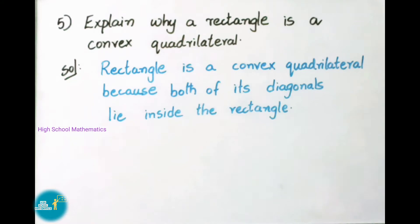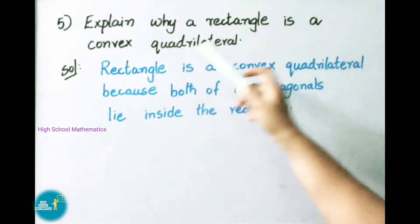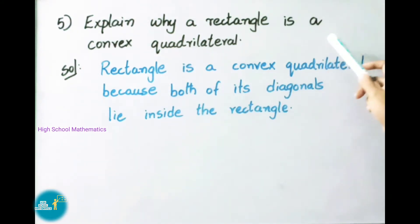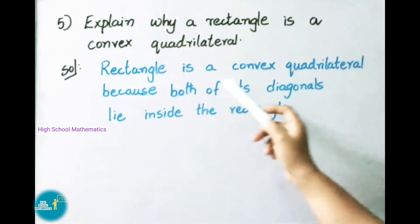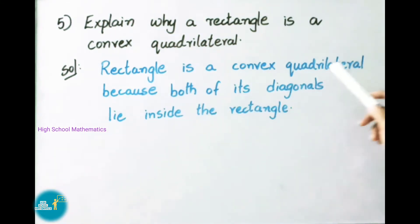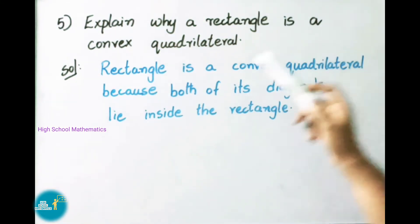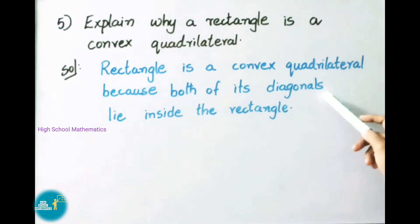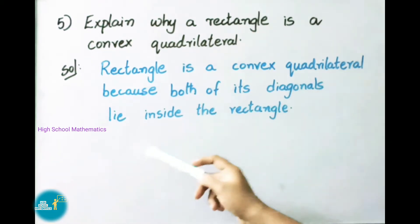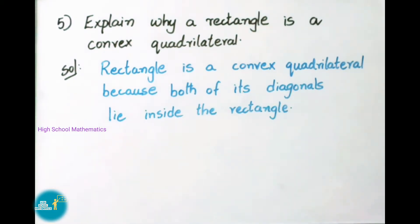Question number 5: Explain why a rectangle is a convex quadrilateral. Rectangle is a convex quadrilateral because both of its diagonals lie inside the rectangle.